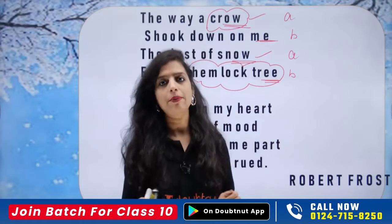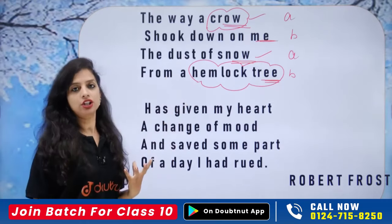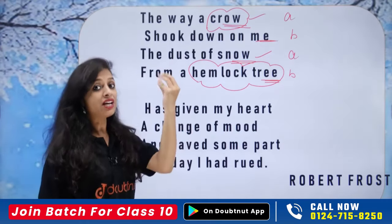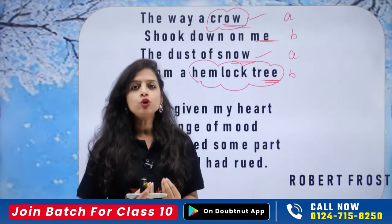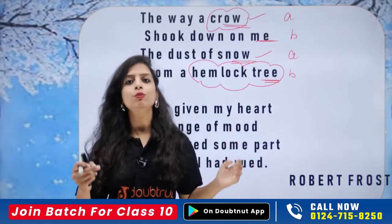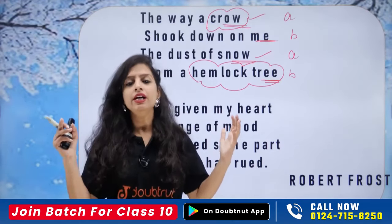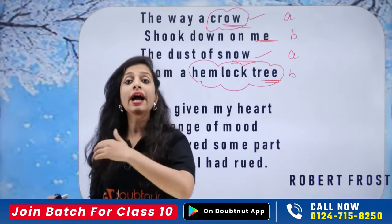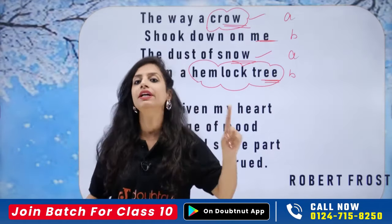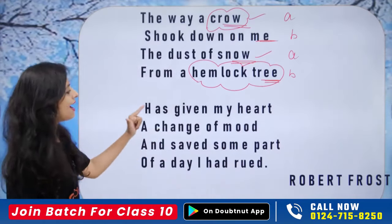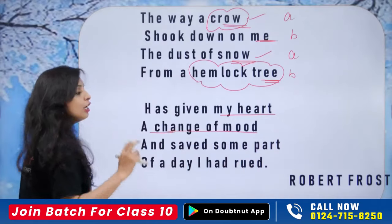At that very moment, the crow shook — it fluttered — and the ice/snow on the tree fell on him. There were some showers of snow dust falling on him. He was also in a bad mood, but as soon as the snow fell on him, he came out of his zone. And as he came out of that zone, he felt — 'Oh wow, this is something new! This is a symbol that something good is going to happen.'